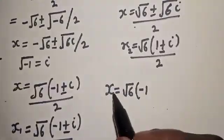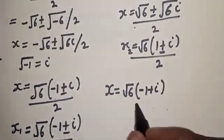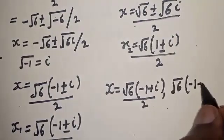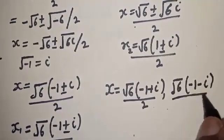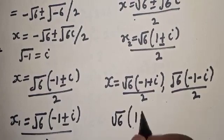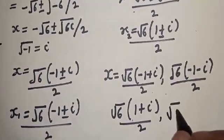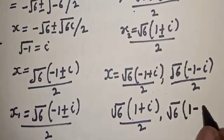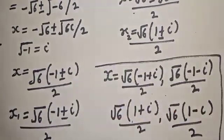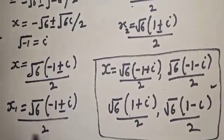Our final answers are: x = √6 · (−1 + i) / 2, x = √6 · (−1 − i) / 2, x = √6 · (1 + i) / 2, and x = √6 · (1 − i) / 2. These are the four values of x. If you enjoyed the class, please don't forget to like, share, comment and subscribe. Thank you.